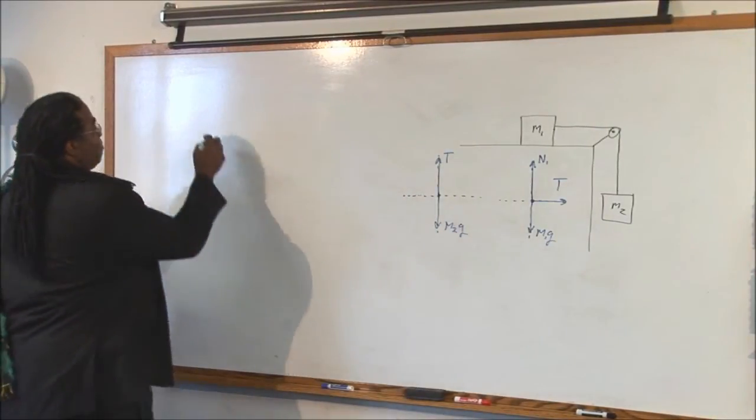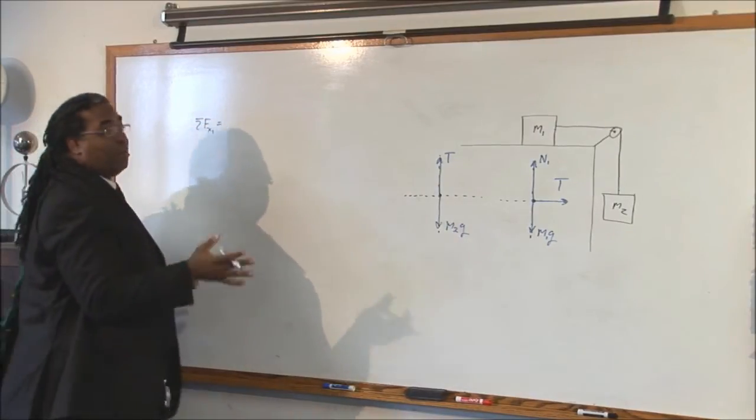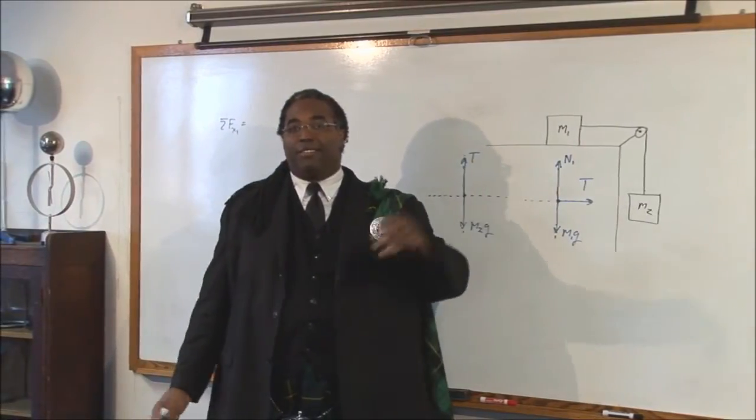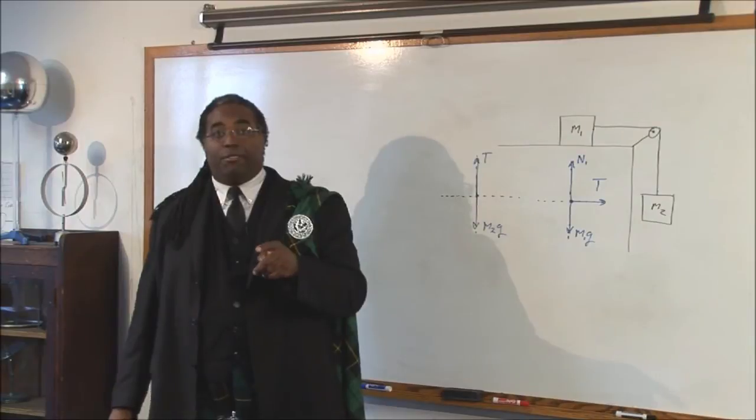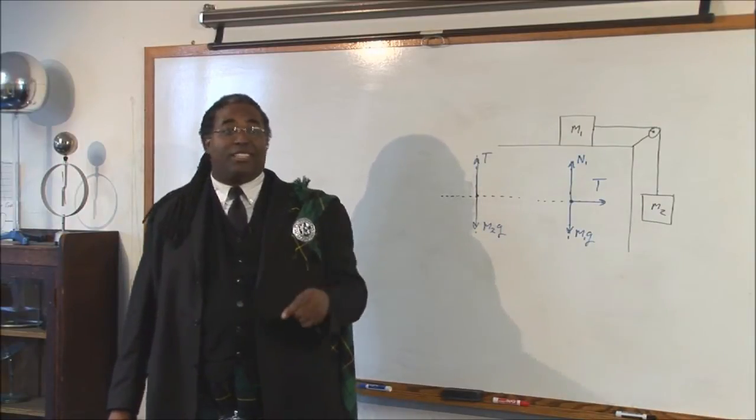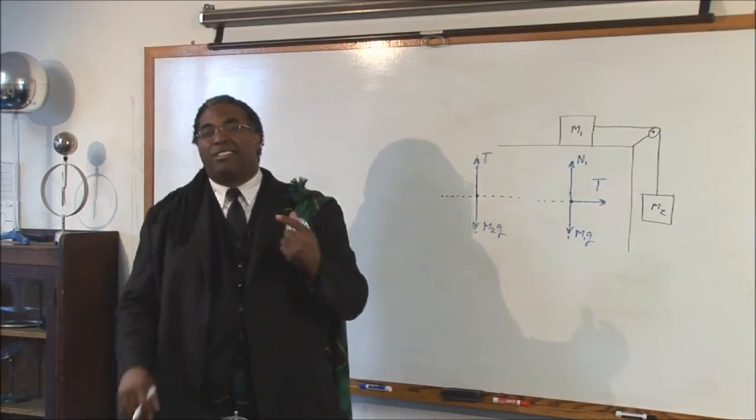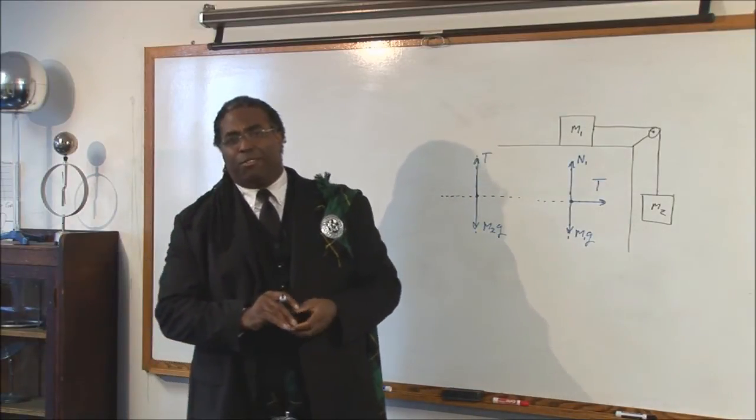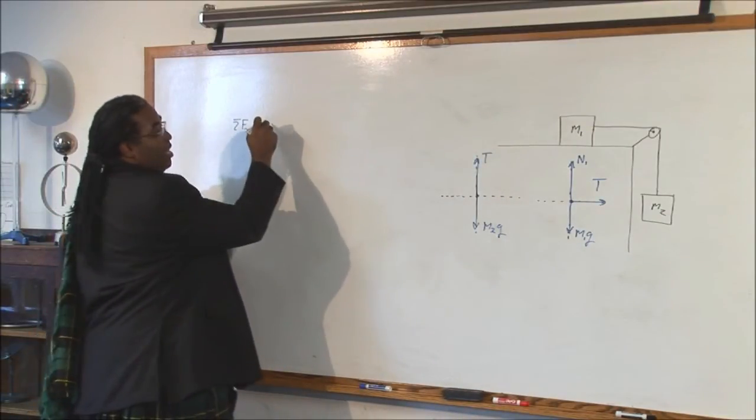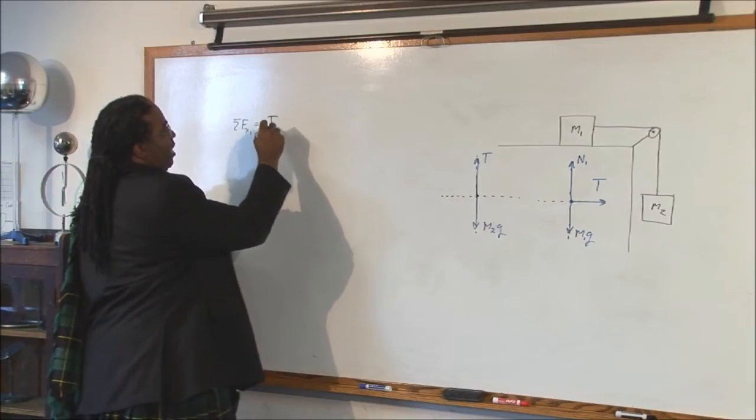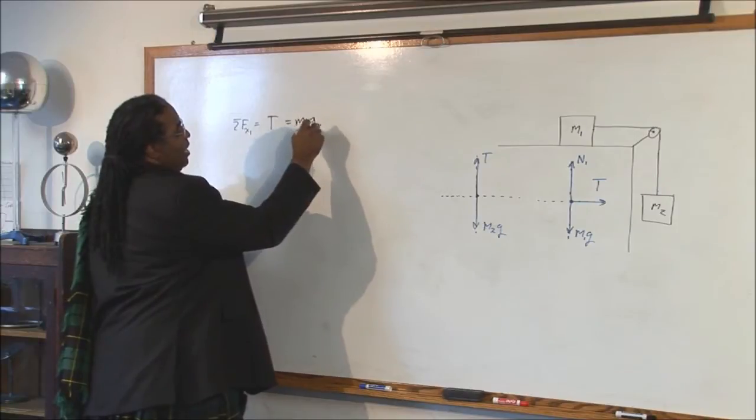So, let's start with our first block. The sum of the forces in the x on block one. And remember what we said. If the arrow's pointing to the right, it's positive. If it's pointing to the left, it's negative. But I will remind you, step one is choose your coordinate system. We just as easily could have called this the negative x direction and not the positive x. But, for now, let's just leave it the way that we're usually comfortable for. So, this is the positive x direction. So, the arrow that we have going to the right is tension. There's nothing else to the left, so that's equal to m1a in the x.